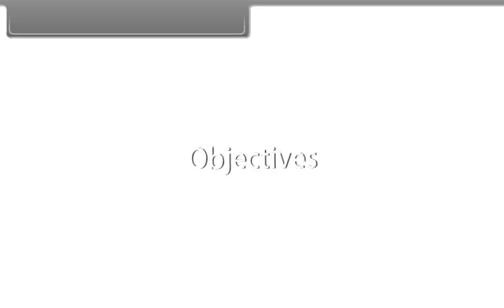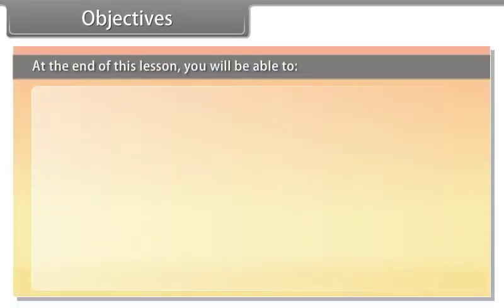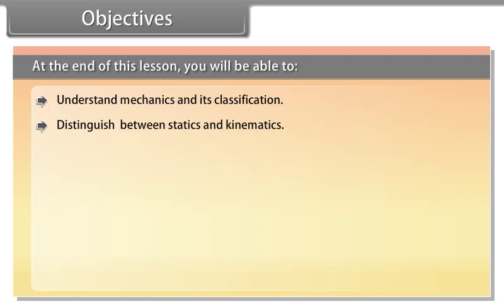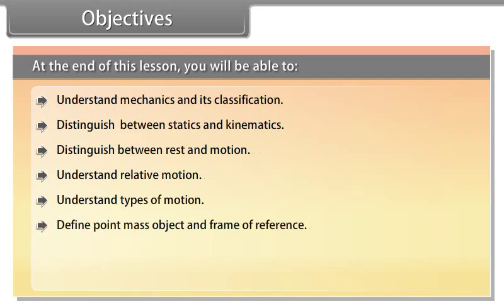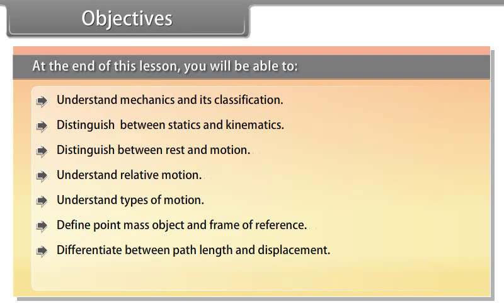Objectives: At the end of this lesson, you will be able to understand mechanics and its classification, distinguish between statics and kinematics, distinguish between rest and motion, understand relative motion, understand types of motion, define point mass object and frame of reference, differentiate between path length and displacement, and understand the difference between speed and velocity.